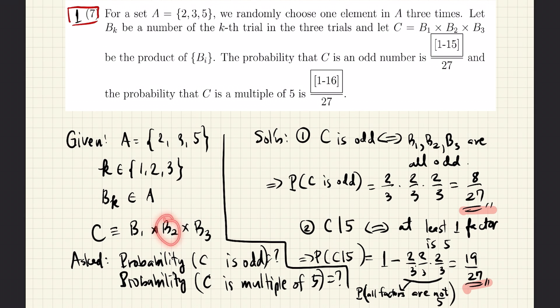For B2, again, we avoid 5, and so we can only select 2 or 3, which is 2 out of the 3 numbers. So the probability of that is again 2 thirds. And the same is true for the third number, B3. The probability that B3 is either 2 or 3 is again 2 thirds.